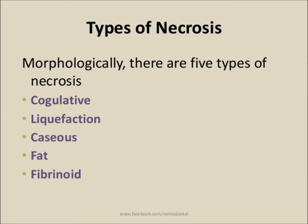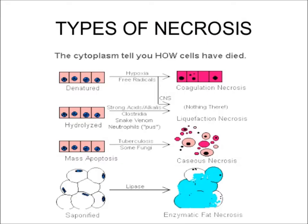Necrosis is irreversible cell injury leading to cell death, showing nuclear and cytoplasmic changes. On a morphological basis, we can classify different types: coagulative necrosis, liquefactive necrosis, caseous necrosis, and fat necrosis. The most common is coagulative necrosis, caused by ischemia. In coagulative necrosis the outline of cells is initially maintained due to protein denaturation; in liquefactive necrosis there is loss of cellular detail; in caseous necrosis there is coagulation and fragmentation; and in fat necrosis there is saponification.